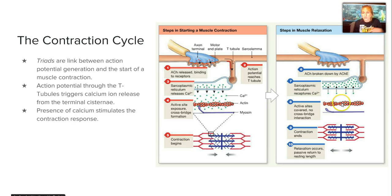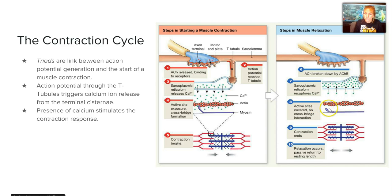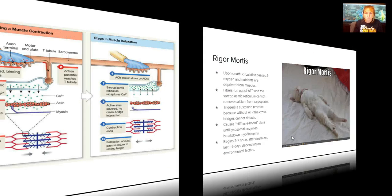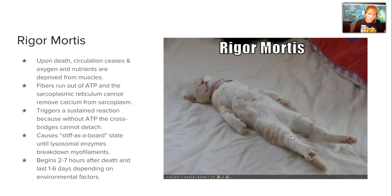To relax the muscle, the ACH will break down by the enzyme acetylcholinesterase. Through use of ATP in active transport, the sarcoplasmic reticulum will recapture the calcium. The active sites will become unexposed, so there's no crossbridge, and the muscle will relax.